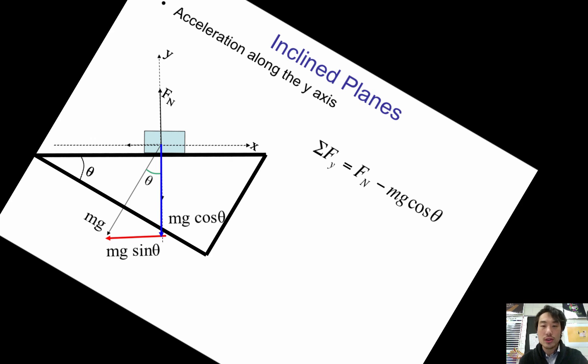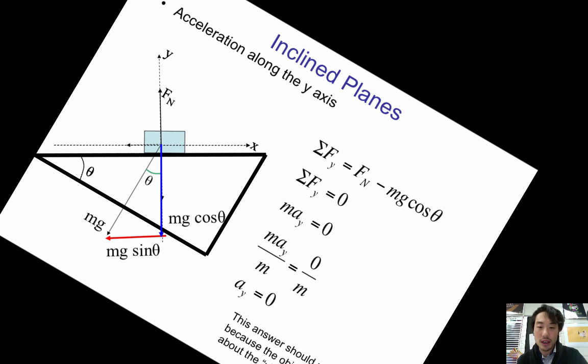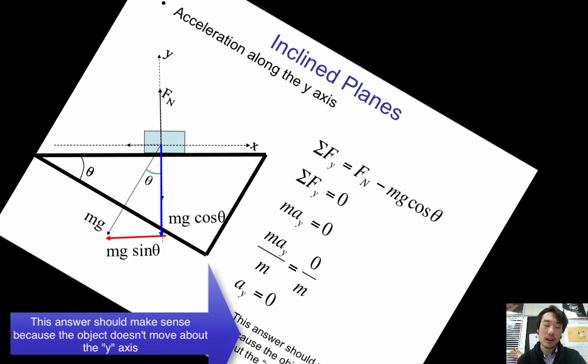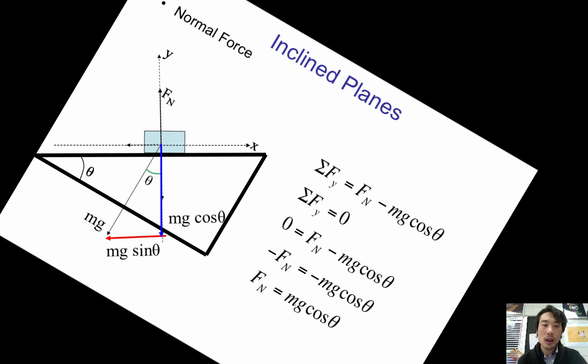Acceleration along the y axis. Once again, start off with your net force equation. And we know that it's not moving up or down or it's not accelerating up or down. So the net force will all equal zero. Therefore, we can replace F with ma, divide both sides by m, and then we get acceleration in the y direction is equal to zero. This should make sense because, like I've been saying, the object doesn't accelerate up or down the y axis.